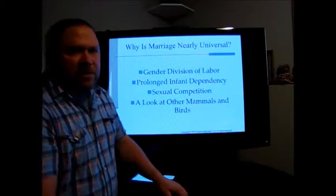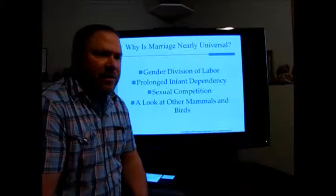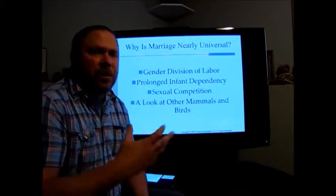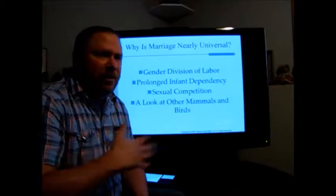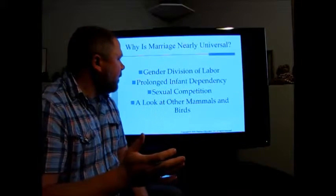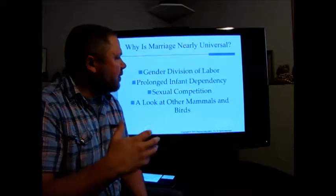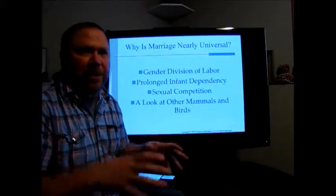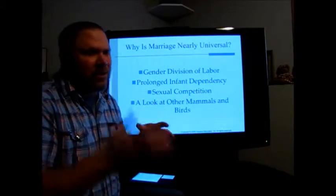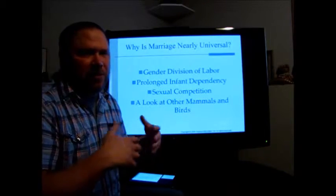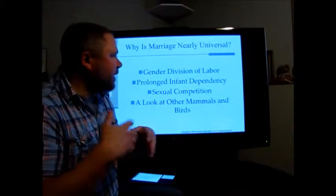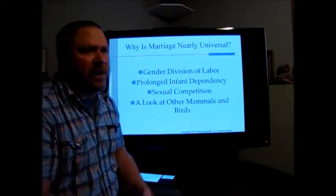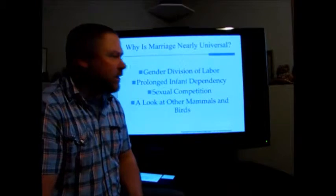Another theory is the sexual competition theory, also tied into Darwin's ideas. Human females can theoretically have sex any time of the year, and because of that there could be continuous competition among males. This is another theory you'd think about when comparing to other animals and their sexual competition. All of these theories have their strengths and weaknesses, which you can get from the textbook.